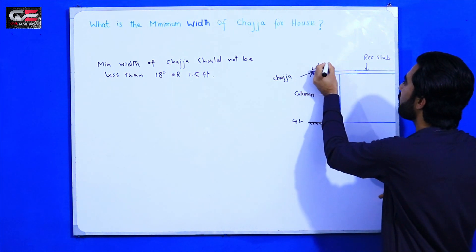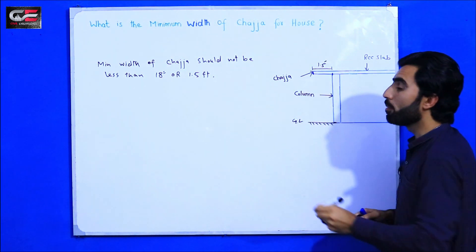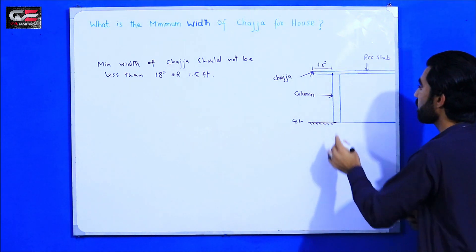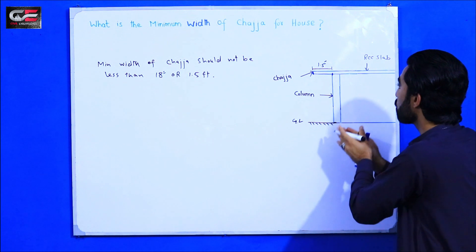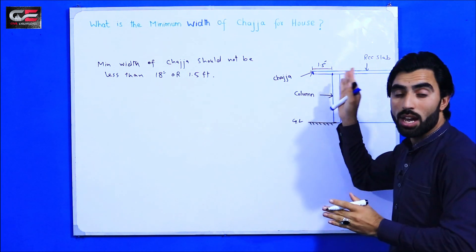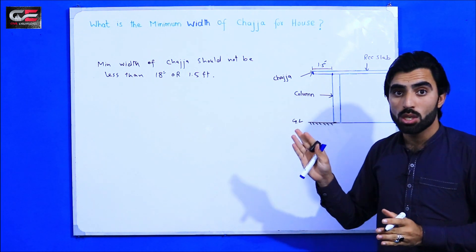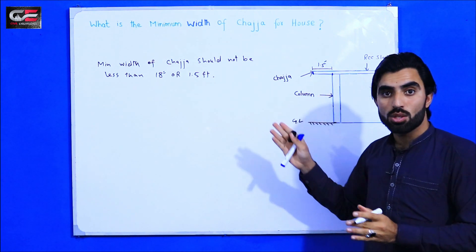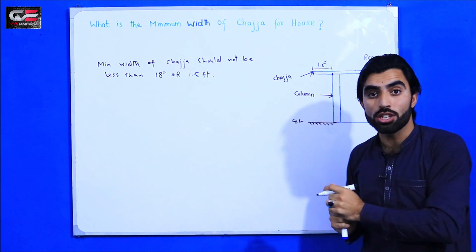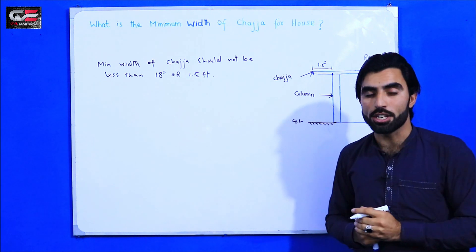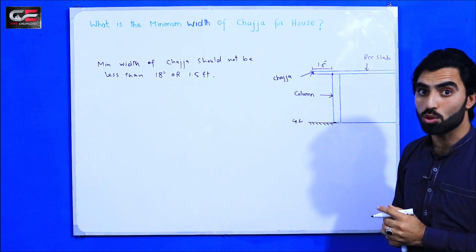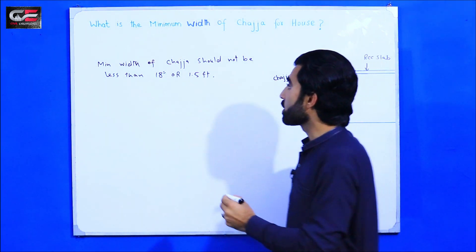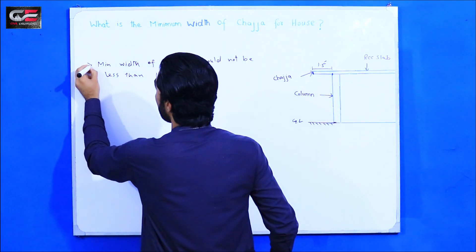As you can see in this cross-section, there are doors, windows, and also a ventilation system. During rain it can affect the elevation, side cross-section, etc. Therefore the chadja should not be less than 18 inches.